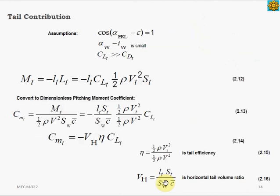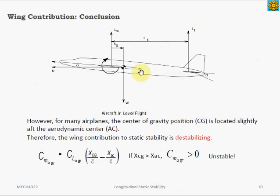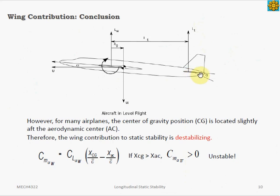In a typical aircraft, the wing lift acts at the aerodynamic center, which is in front of the center of gravity, causing a destabilizing motion. However, this instability is counteracted by the moment produced by the lift of the horizontal tail acting behind the center of gravity. The tail stabilizes the aircraft — without the tail, an aircraft would never be able to fly. This is why the horizontal tail is commonly called the horizontal stabilizer.